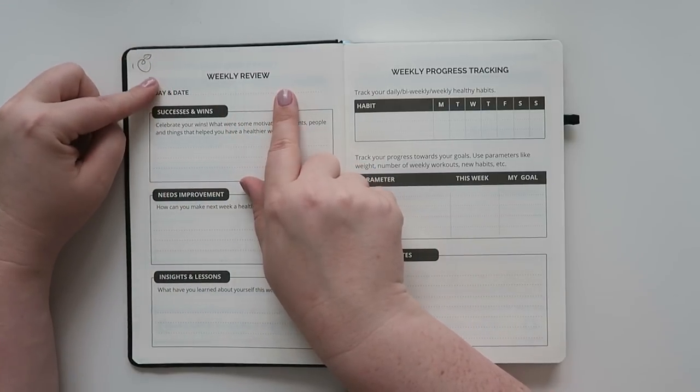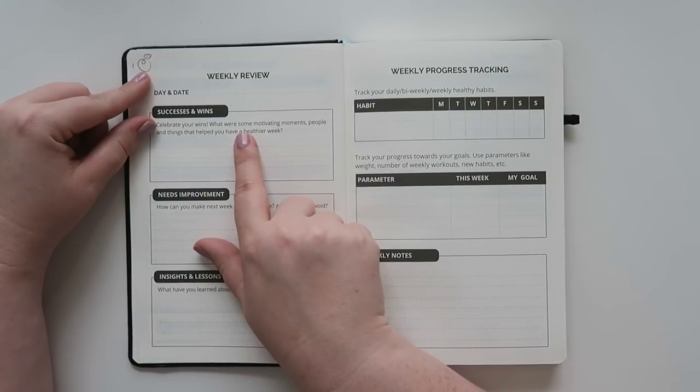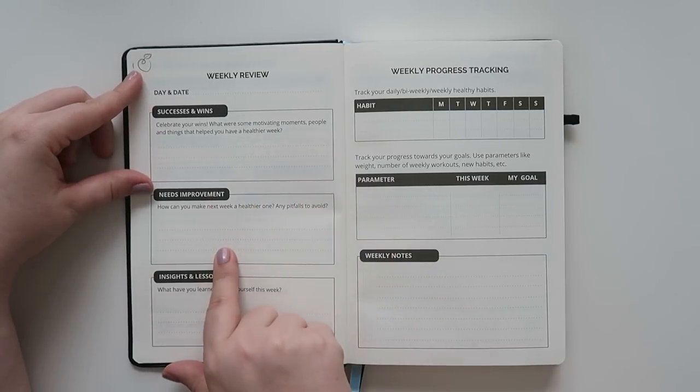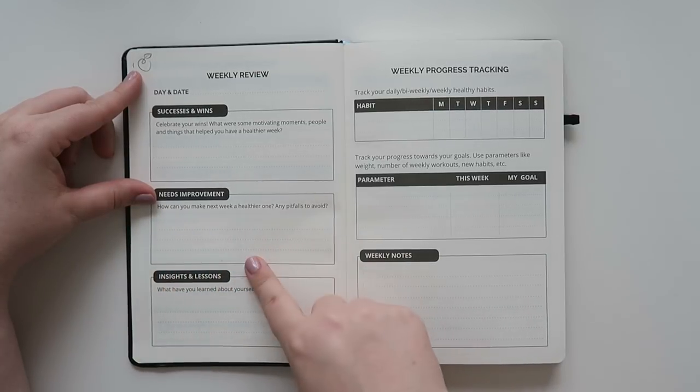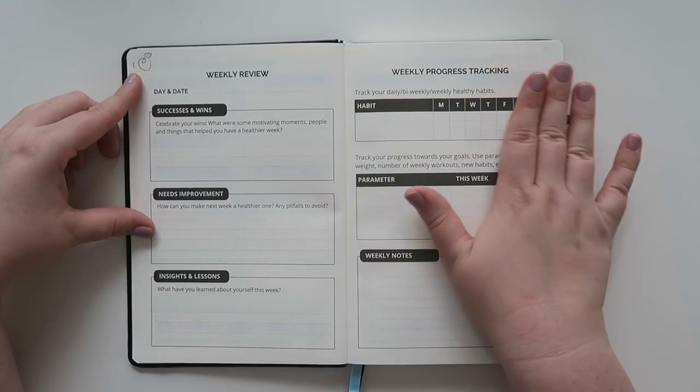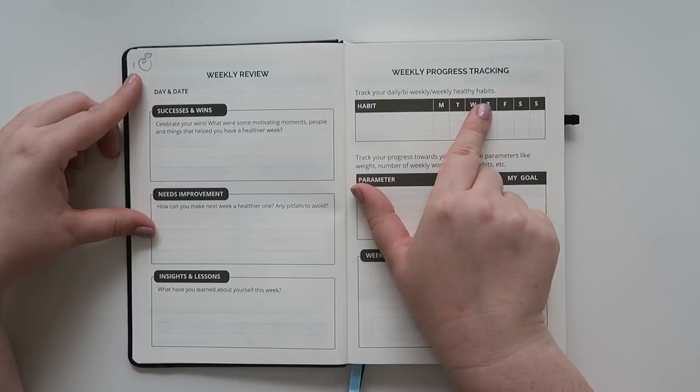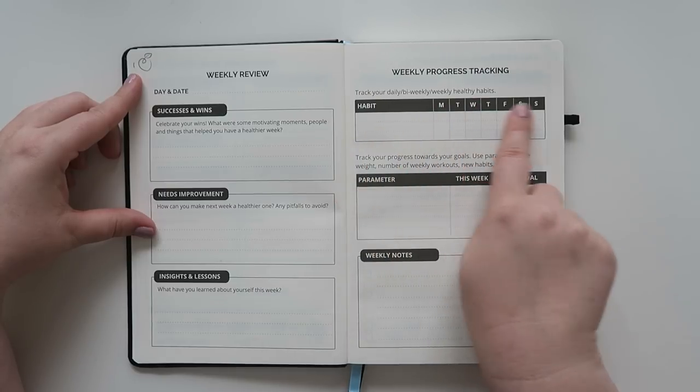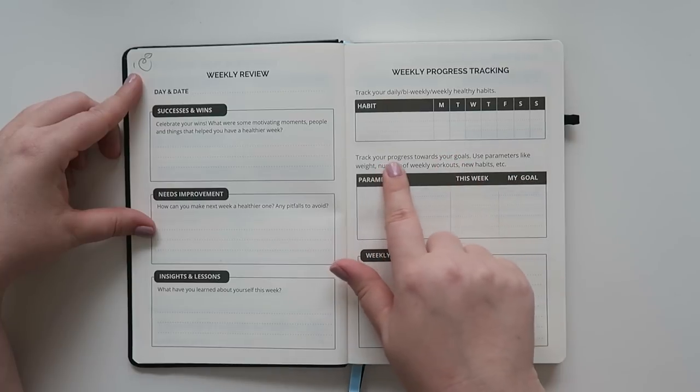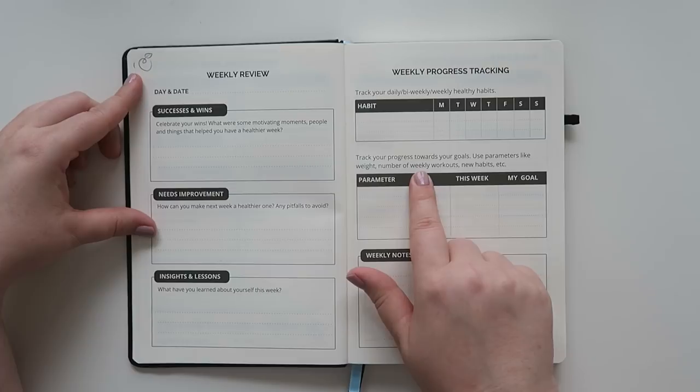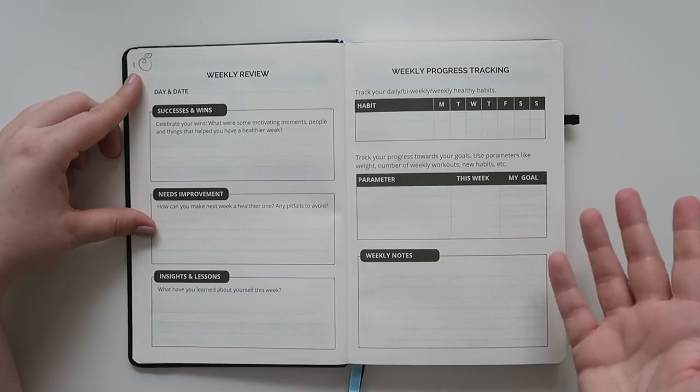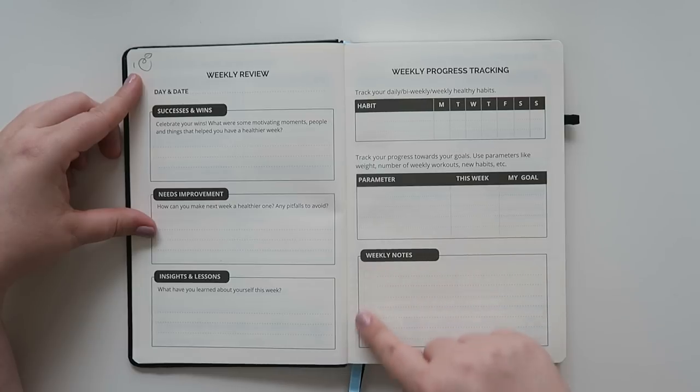So your weekly review, you put the day and the date successes and wins. And it says, celebrate your wins. What were some of the motivating moments, people, and things that helped you have a healthier week. And then you have three lines to write about that. And it says, needs improvement. How can you make next week a healthier one? Any pitfalls to avoid? And it's got three lines. The next section is insight and lessons. What have you learned about yourself this week? And three more lines. And then over here is the weekly progress tracking. And it says, track your daily bi-weekly and weekly healthy habits. So it's got three sections here and then Monday through Sunday. So you can either check that off or, you know, if there's a certain amount of ounces of water or something like that, you could do that as well. And then over here, it says, track your progress towards your goals. Use parameters like weight, number of weekly workouts, new habits, et cetera. And it says parameter this week, my goal. That'd be nice if you're trying to fluctuate your weight or something like that. And then weekly notes. It's got a bunch of lines and some check boxes as well.